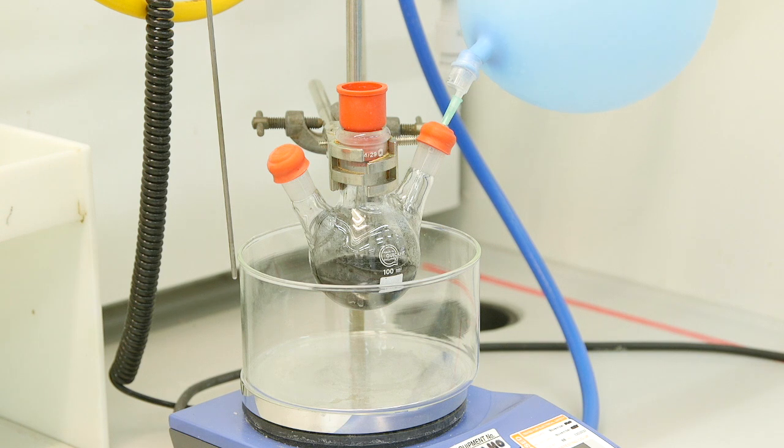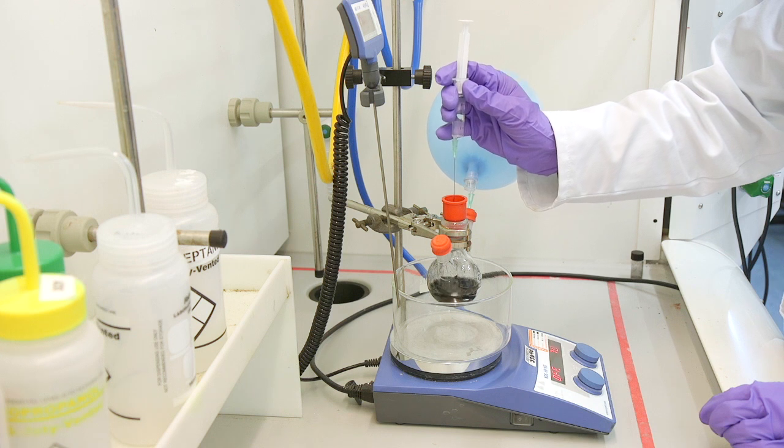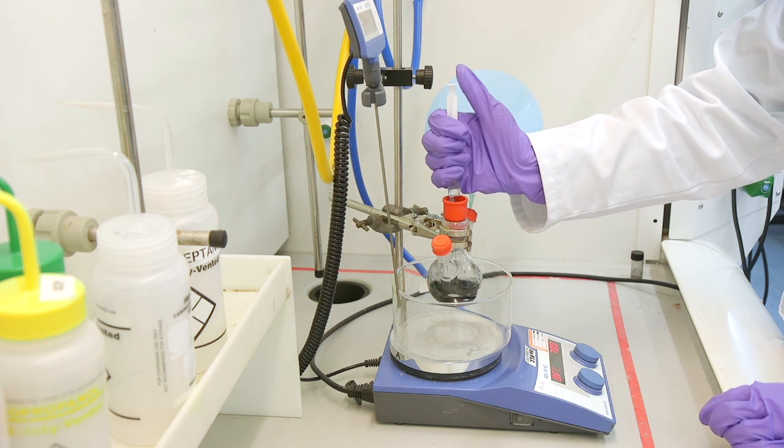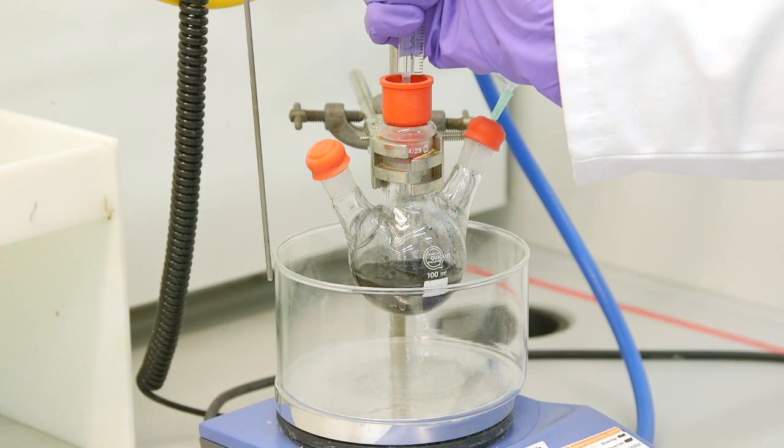It is now at this stage we can add our substrate or starting material. This has been pre-dissolved in ethanol. We can use a needle and syringe to do this to ensure we keep a dry atmosphere inside the flask.